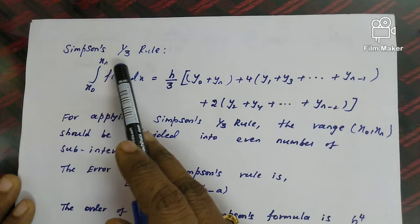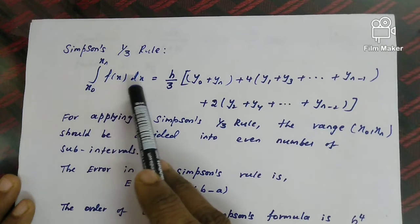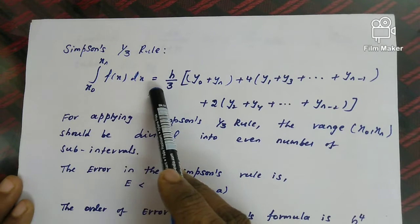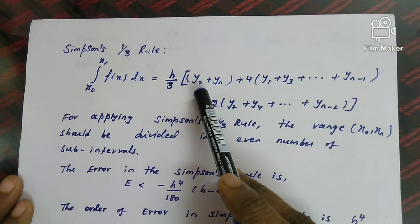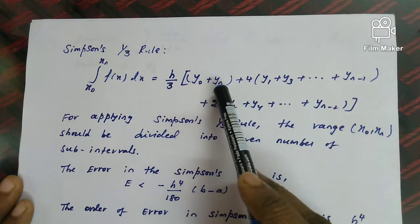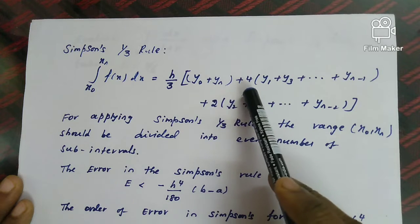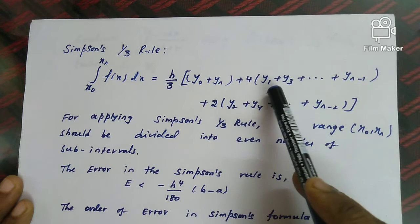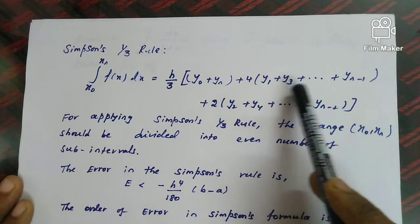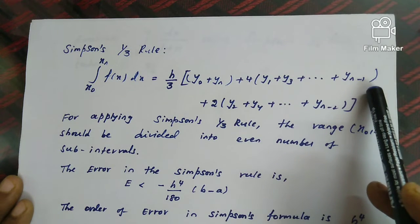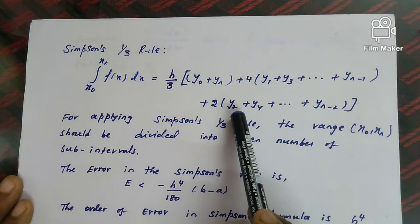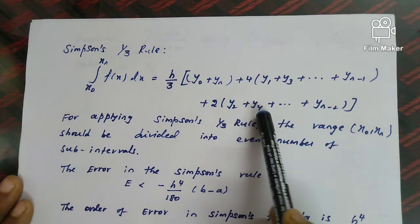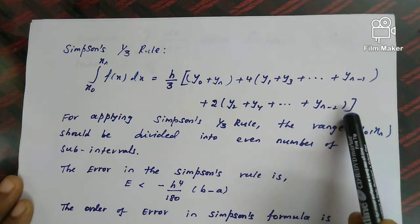The rule states: the integral from x₀ to xₙ of f(x) dx equals h/3 times [y₀ + yₙ + 4(y₁ + y₃ + ... + yₙ₋₁) + 2(y₂ + y₄ + ... + yₙ₋₂)].